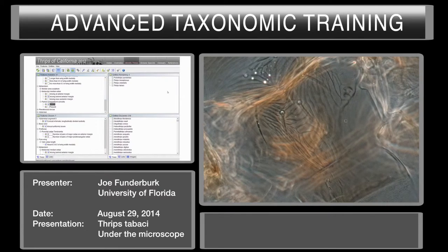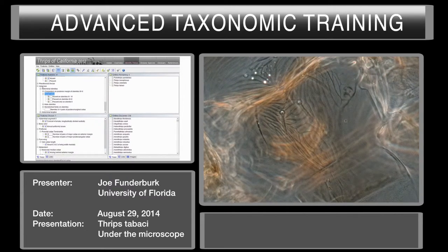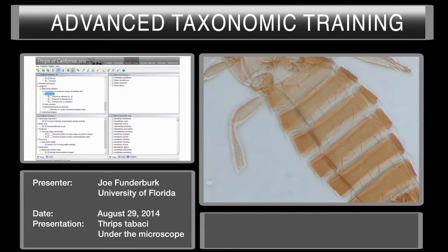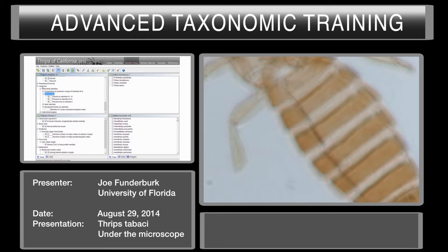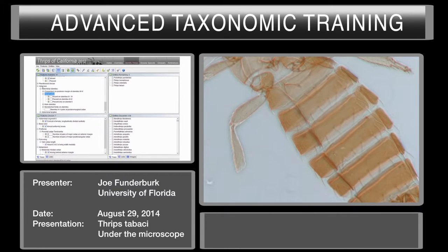We're down to four species. The next best character is discal setae on the abdomen — specifically abdominal sternites three through six. I needed to lower my magnification so we could see this. Even at this lower magnification, we don't see any discal setae; there are some marginal setae on the sternites. So I'm going to say absent.